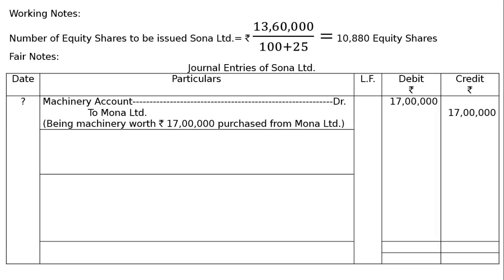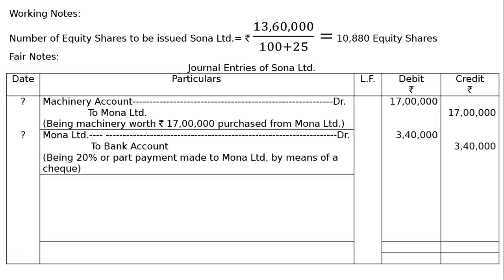Next entry — Mona Limited debited to Bank Account. Narration: being 20 percent part payment made to Mona Limited by means of a check, that is ₹3 lakh 40,000, which is 20 percent of 17 lakhs. The rest will be paid by shares.